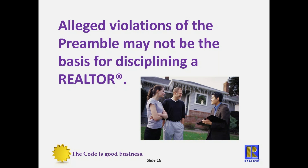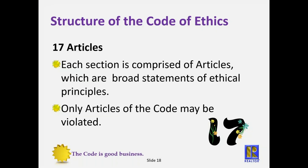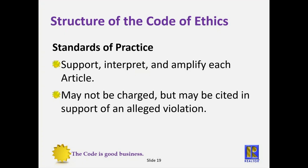Alleged violations of the preamble cannot be used as discipline. Once we get into the code itself, there are three sections: duties to clients and customers, duties to the public, and duties to other realtors. Within the structured code, there are 17 articles. Each article gives a broad statement of ethical principles, and only the articles of the code can be violated. We also have standards of practice, which support, interpret, and amplify each of those articles. They can't be cited themselves, but can be used in support of an alleged violation.